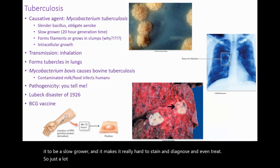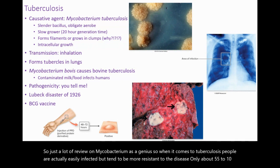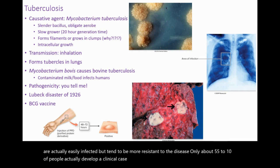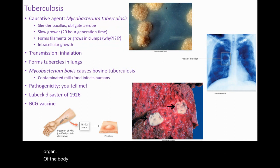So just a lot of review on Mycobacterium as a genus. When it comes to tuberculosis, people are actually easily infected but tend to be more resistant to the disease — only about 5 to 10% of people actually develop a clinical case of tuberculosis. Oftentimes it's contained in the lungs, but disseminated bacteria can give rise to tuberculosis in any organ of the body. Clinical tuberculosis is divided into three categories: primary, secondary, and disseminated tuberculosis.